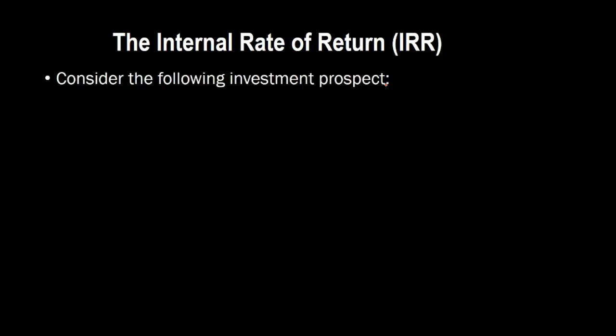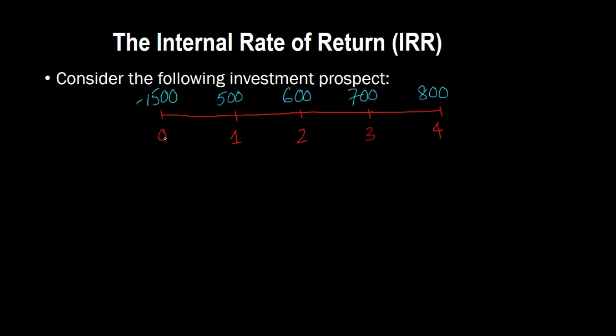In this video I'm going to talk about the internal rate of return and how you can think about it for a more complex kind of project. In a previous video we saw how the IRR can be computed for a very simple project which only generates cash flows for one year. But how about an investment prospect where you have a project requiring an upfront investment of $1,500 and then expected cash flows of $500, $600, $700, and $800 over the next four years?